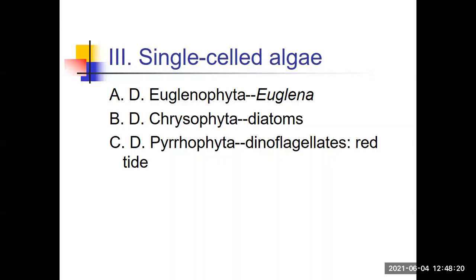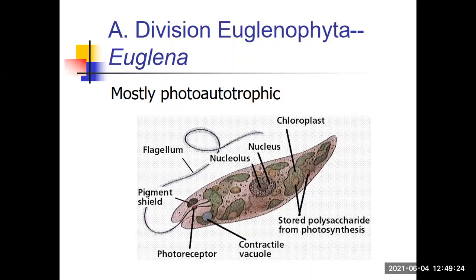The three types of single-celled algae are the Euglenophyta, the Chrysophyta, and the Pyrrophyta. The largest group — the green algae — will be discussed with the multicellular algae. These plant-like groups can be called either phyla or divisions, since phylum and division are the same classification level. Since these organisms are plant-like, they're often called divisions, though phylum is also used.